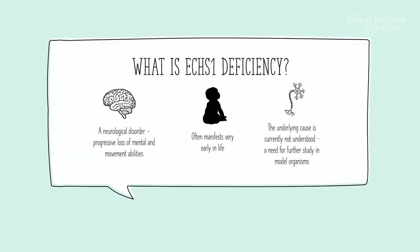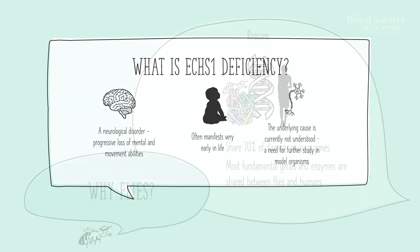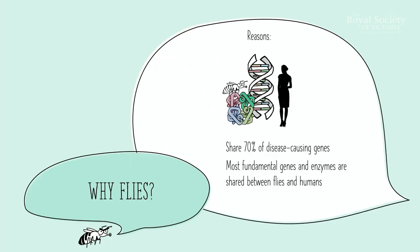So what is ECHI1 deficiency? It's a neurological disorder that's characterized by progressive loss of mental and movement abilities and often manifests very early in life, sometimes days after birth. And the underlying cause of this disease is currently not fully understood. So it's a good candidate for further study in model organisms. And our lab uses the humble fruit fly.